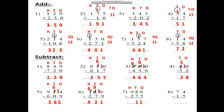9 minus 2. After 2: 3, 4, 5, 6, 7, 8, 9. So it will be 7. The answer is 711.